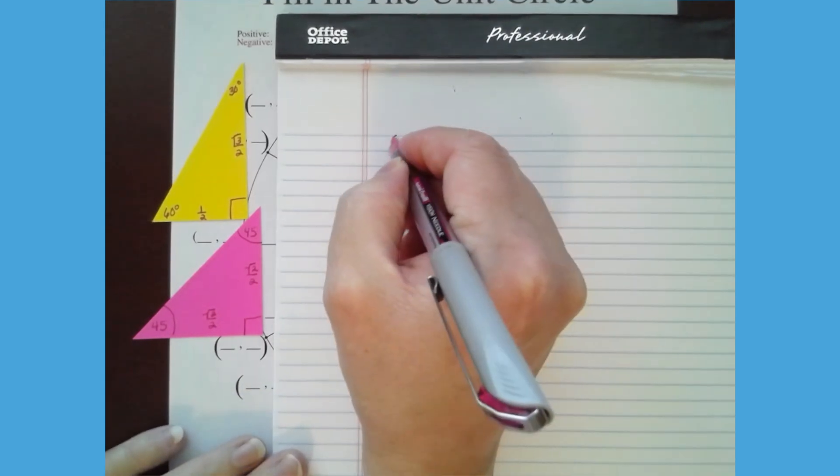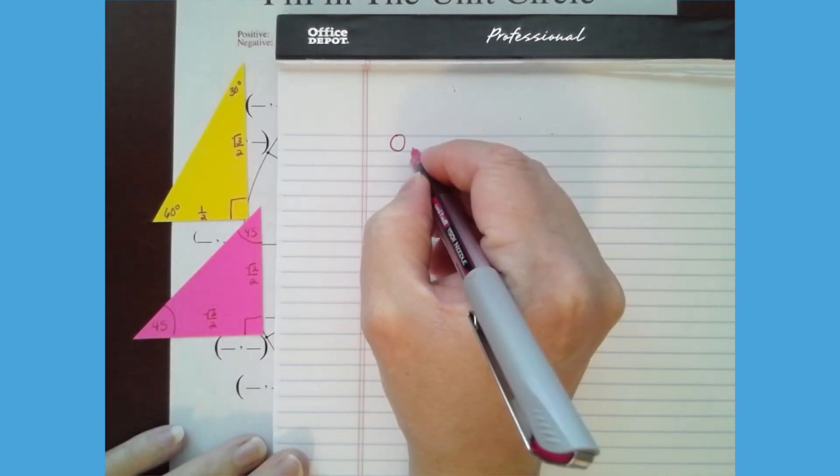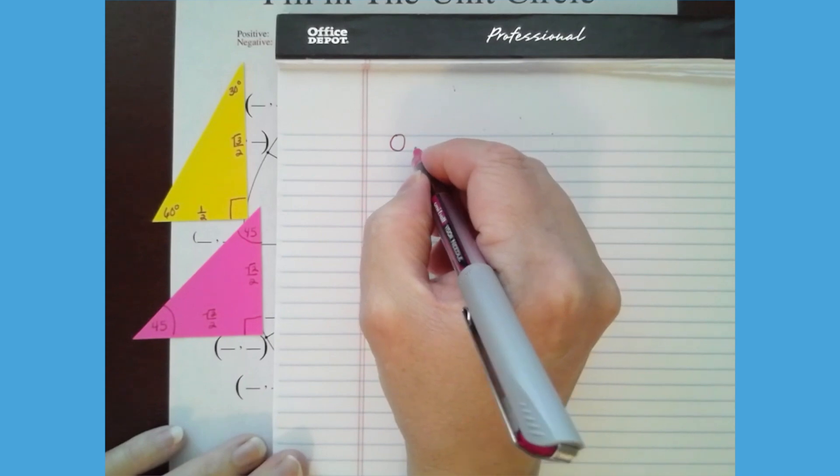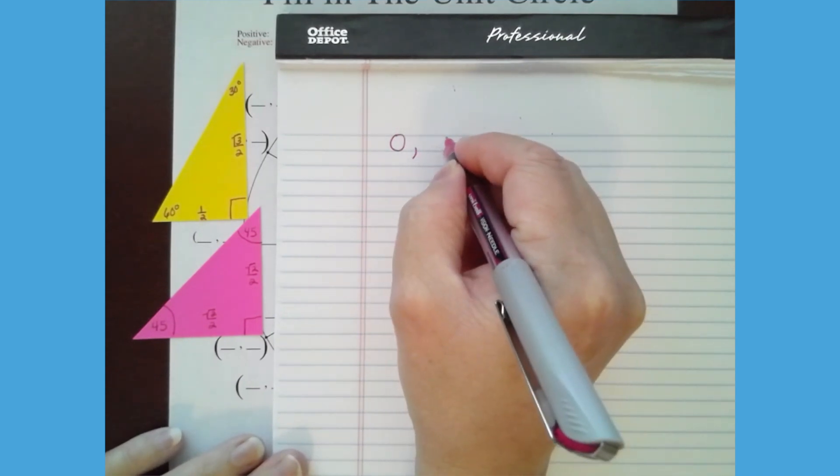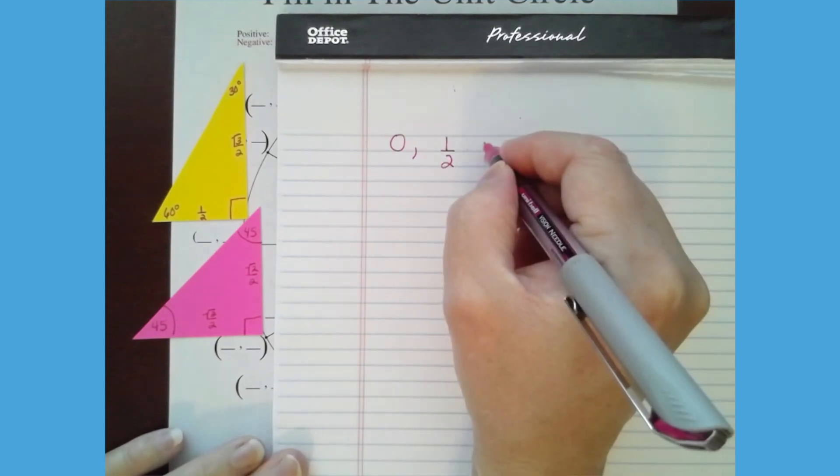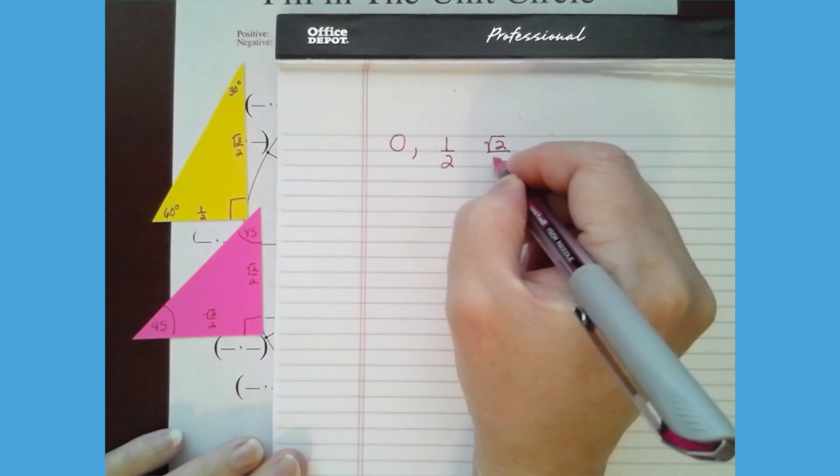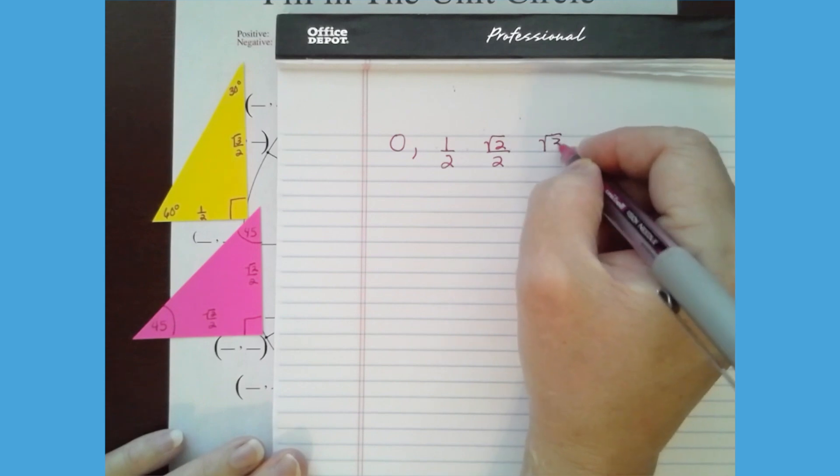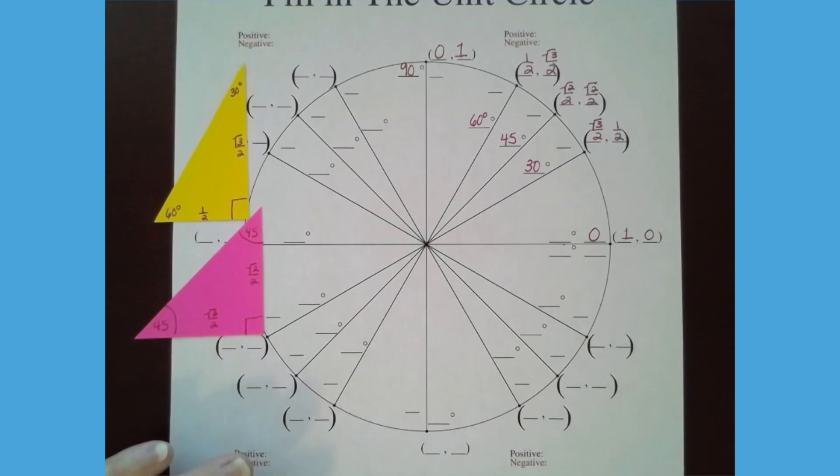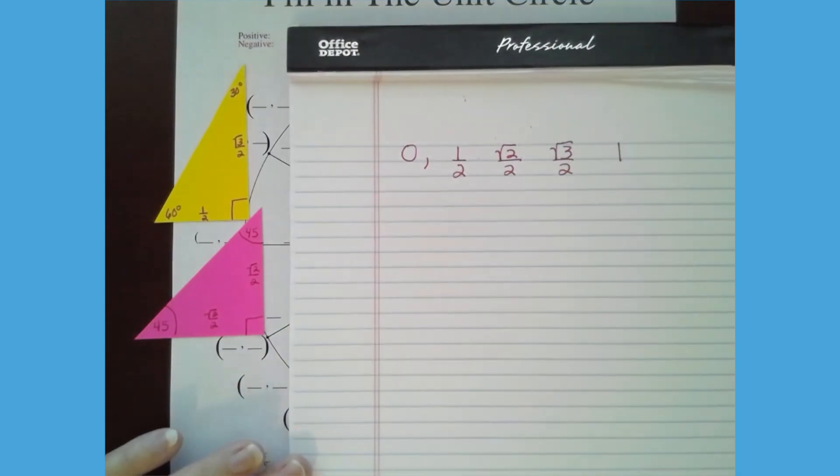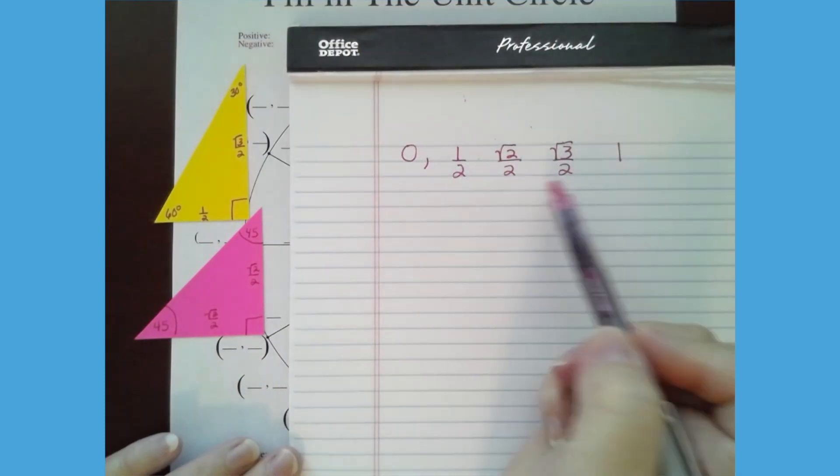So if I write down the numbers that I see here, which is zero, one half, root two over two, root three over two, and one. Those are the numbers. I'm going to take it back away. Those are the numbers I see, right? Because those are the only numbers in the special triangles.